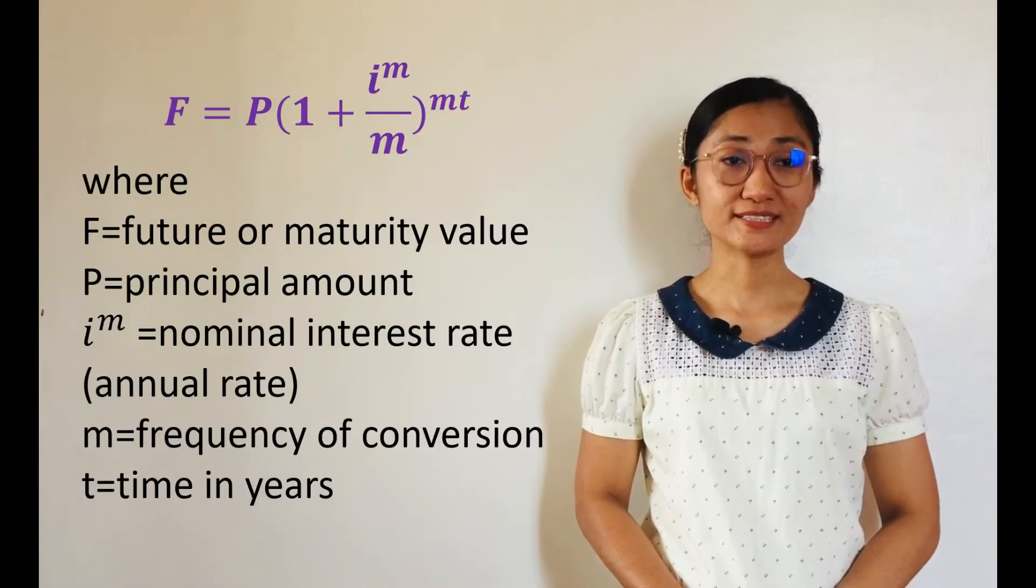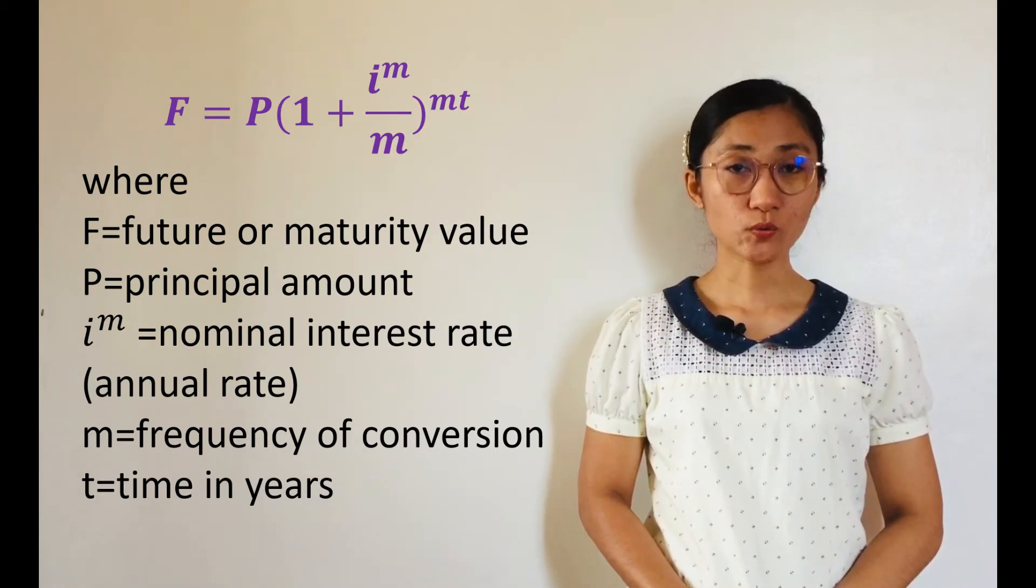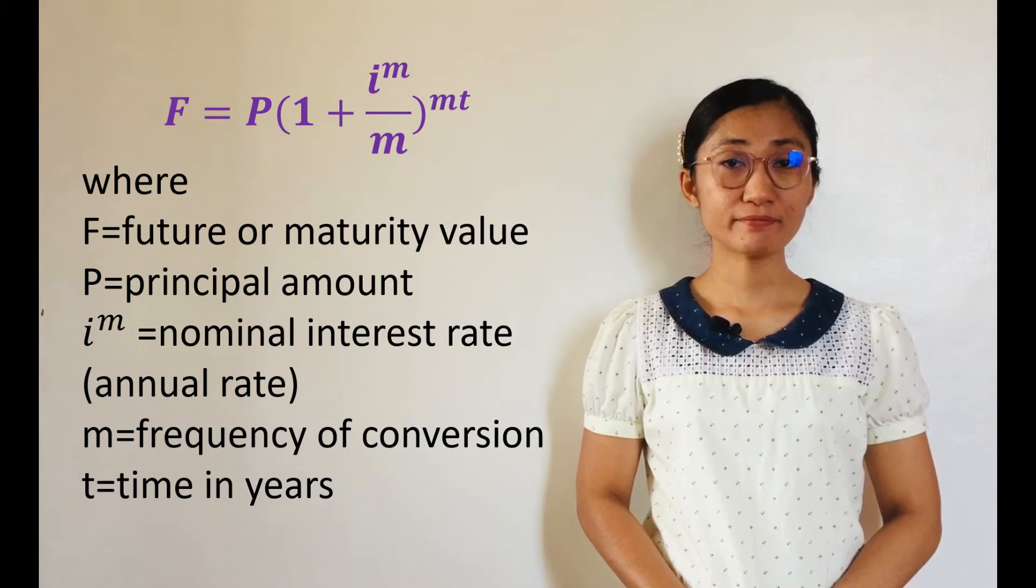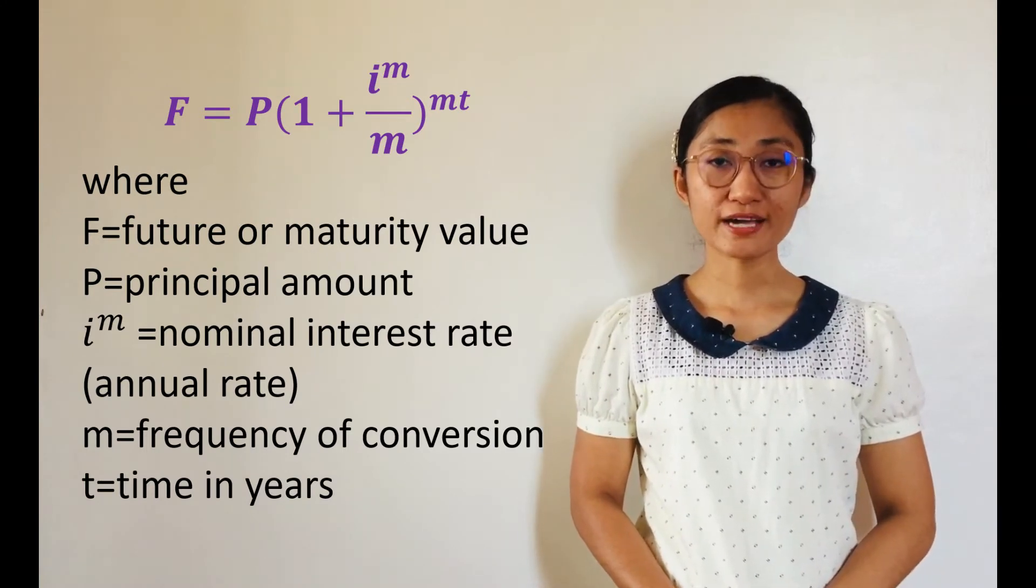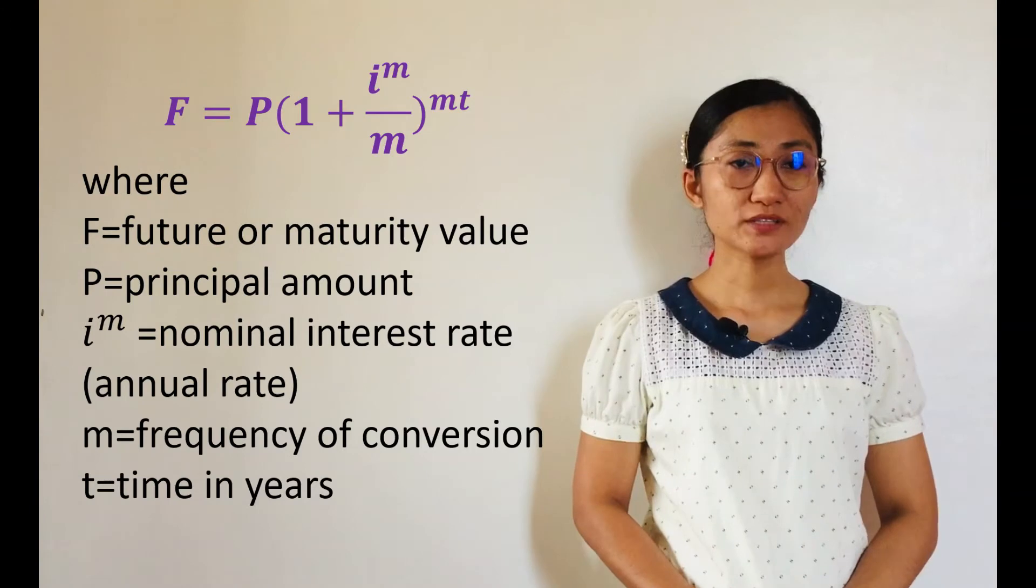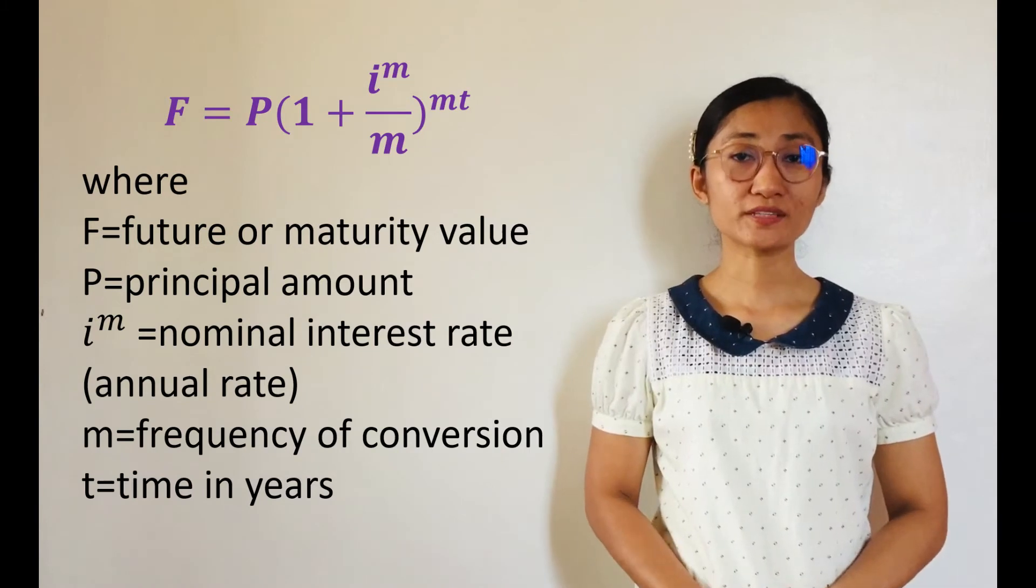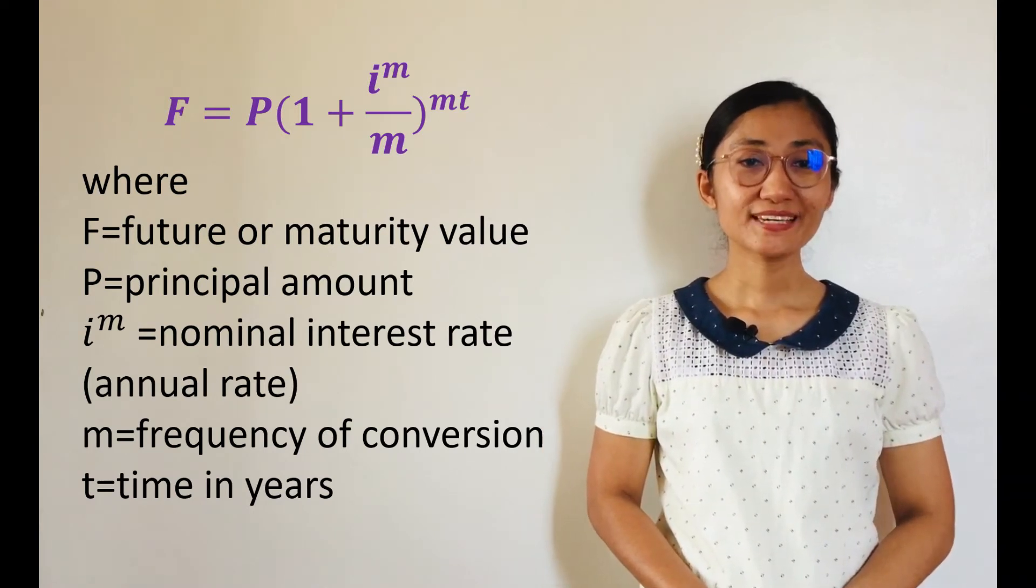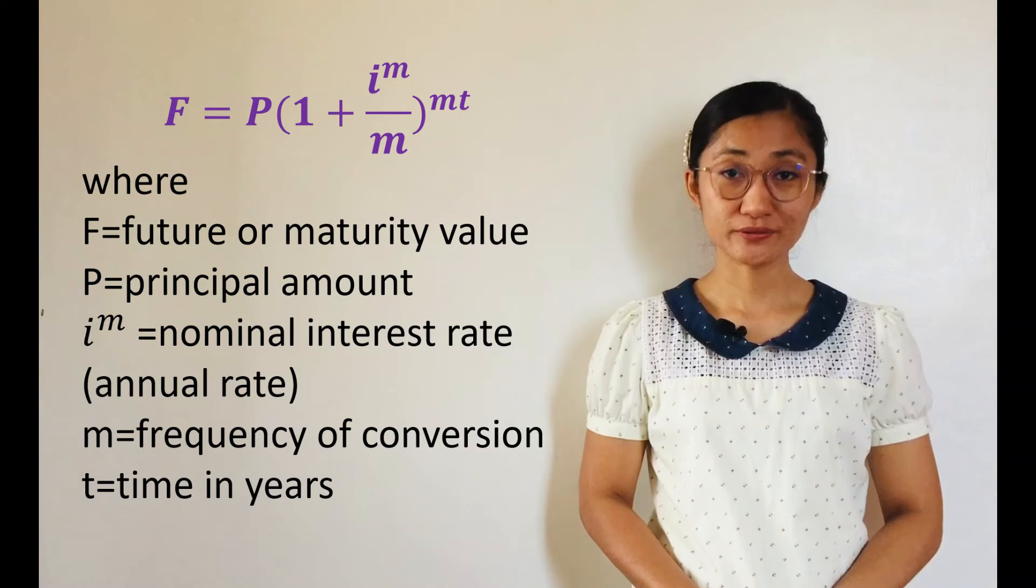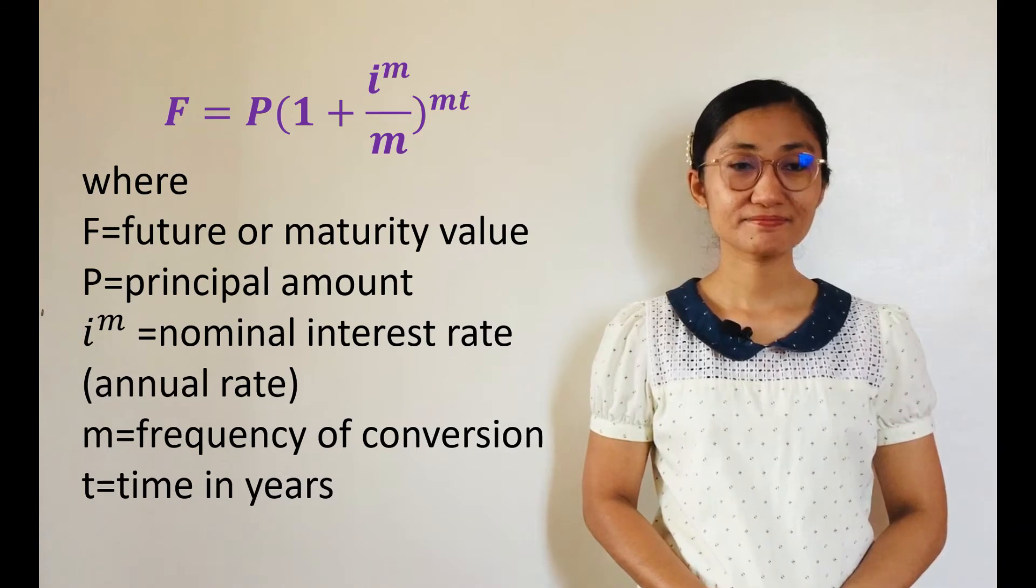The maturity value, or future value, denoted by F, under compound interest, is defined by F equals P times the quantity of 1 plus I^m over M raised to the M times T. I repeat, it is defined by F equals P times the quantity of 1 plus I^m over M raised to the M times T, where P is the principal amount, I^m is the nominal interest rate or the annual rate, M is the frequency of conversion, and T is time in years.